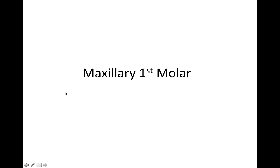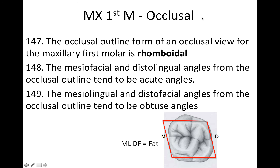We're going to get started on the maxillary first molar and focus on some aspects of the occlusal. The occlusal outline form is going to be rhomboidal. You also have to know about which angles are acute and which are obtuse. The mesiofacial and distolingual angles from the occlusal outline are going to be acute, and the obtuse angles are going to be the mesiolingual and the distofacial.